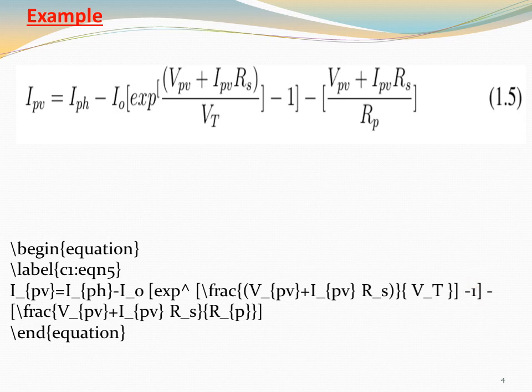Then minus 1 and close the brackets. These are the exponential combinations. Then minus the next part written with \frac: V_{pv} + I_{pv} R_s divided by R_p. End with \end{equation} and execute to get the output equation.